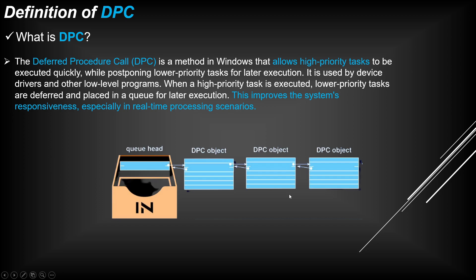You might ask: if we have only high-priority tasks, how does DPC decide which to execute first? The answer is simple — Windows will decide which task to execute first, depending on the process, the task, and the scheduling algorithm.